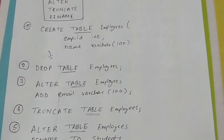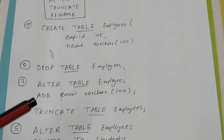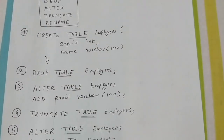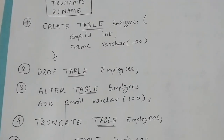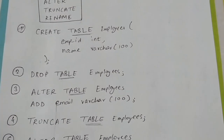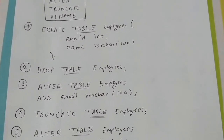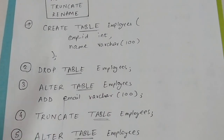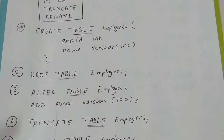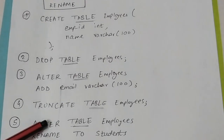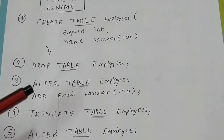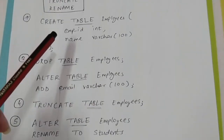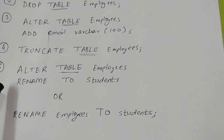The fourth command is TRUNCATE TABLE employees. TRUNCATE removes all rows, but it is a DDL command because it doesn't just remove rows — it deallocates the space allocated to those rows, thereby changing the storage definition. That is why TRUNCATE belongs to DDL.